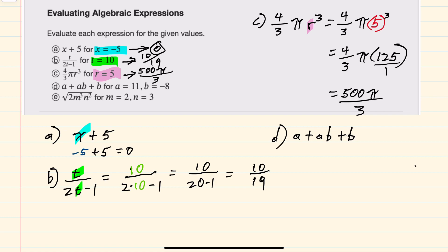For d, we have a plus ab plus b, replacing a with 11, we have 11 plus 11, replacing b with negative 8, negative 8 plus negative 8. Doing our multiplication first, 11 times negative 8 is negative 88. Then doing addition and subtraction left to right, 11 plus negative 88, negative 77, plus negative 8. The signs are the same, so we add and keep the sign. So negative 85.